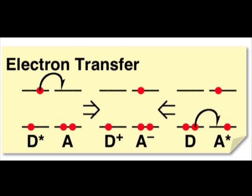In the case of electron transfer, just a single electron moves from the donor D to the acceptor A. The result is a pair of charges, a cation on D and an anion on A. The process can begin either from the excited state of the donor or the excited state of the acceptor.